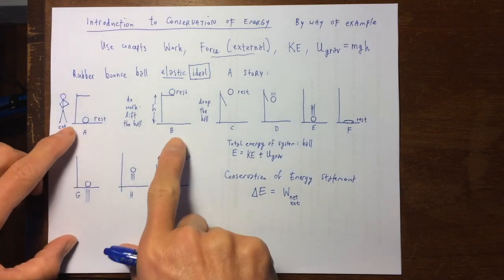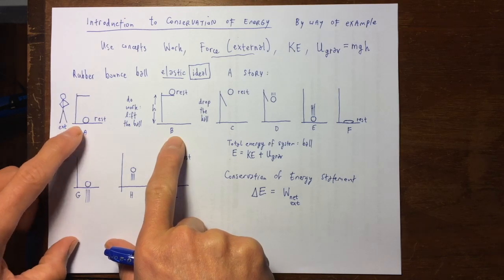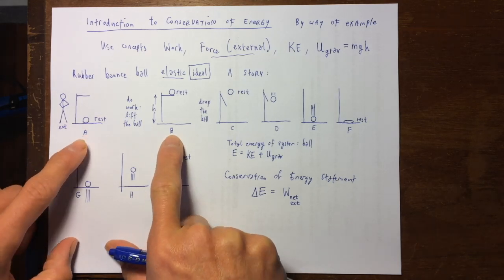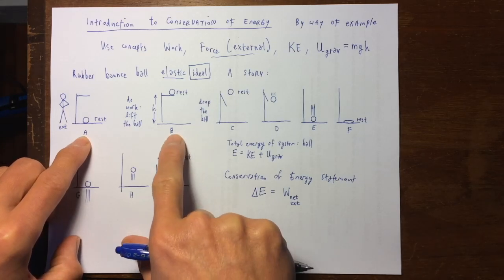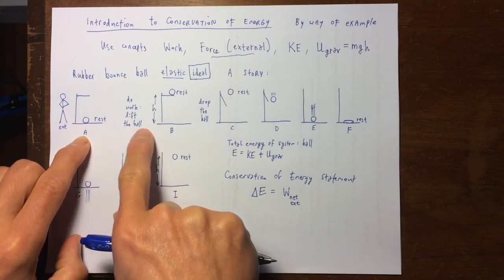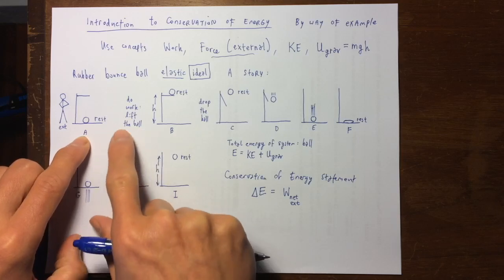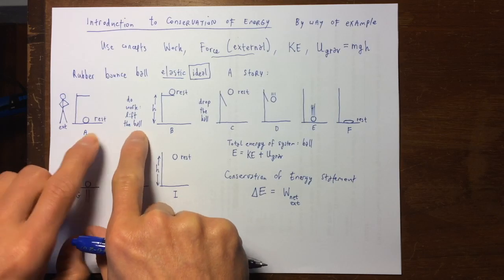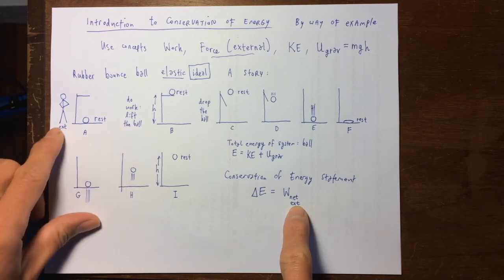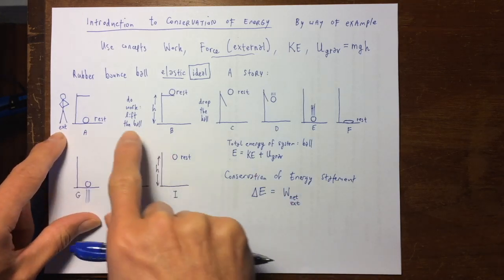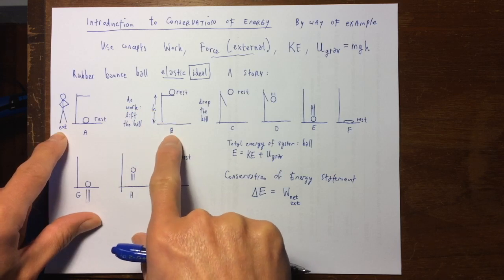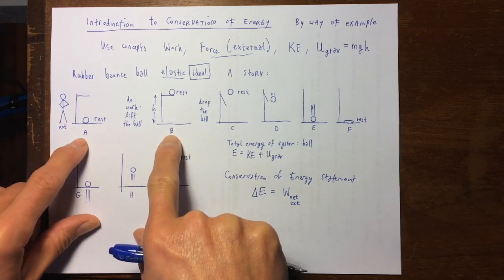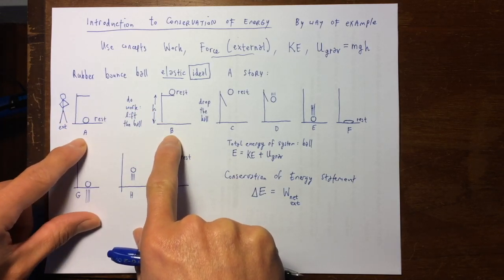Let's check out situations A and B. In between situation A and situation B is some sort of process, and the effect of this process — which is work done by an external person — is to cause the energy in situation B to be different from the energy in situation A.